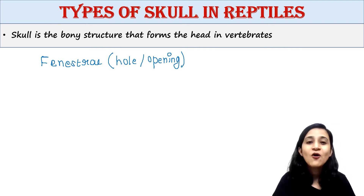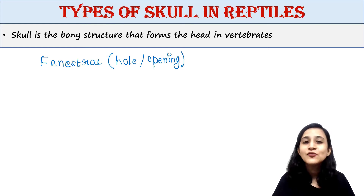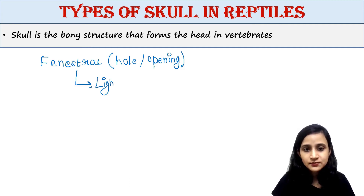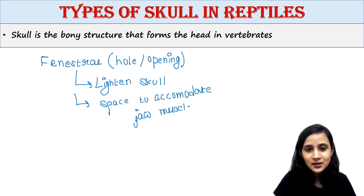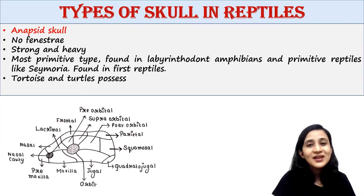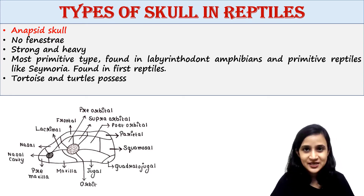Reptiles have large jaws and their jaws contain powerful muscles, so the holes or fenestrae of the skull also provide space to accommodate those powerful jaw muscles. So fenestrae first lighten the skull, and second they provide space to accommodate jaw muscles.